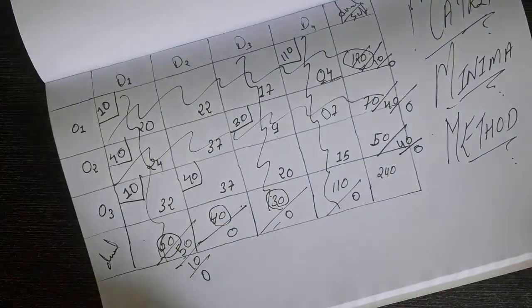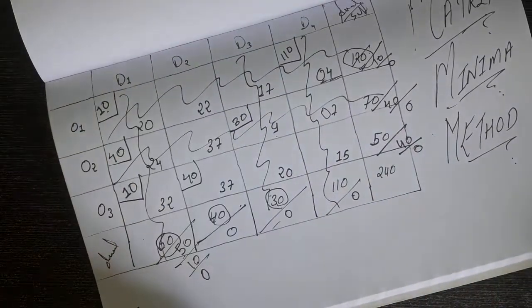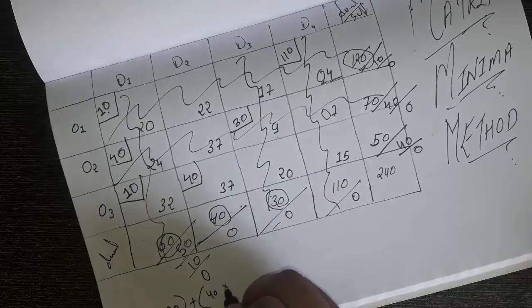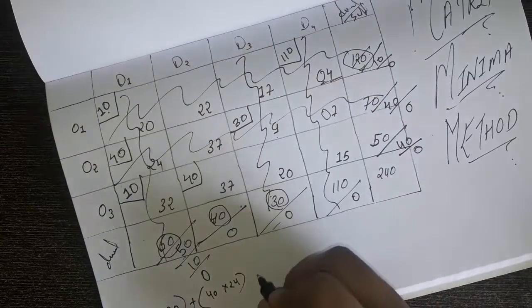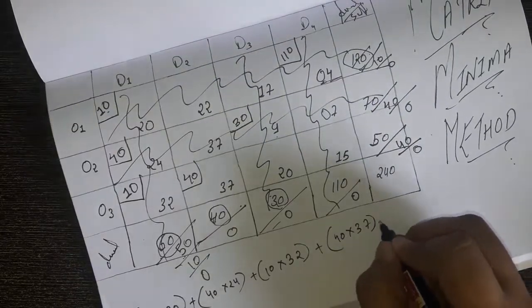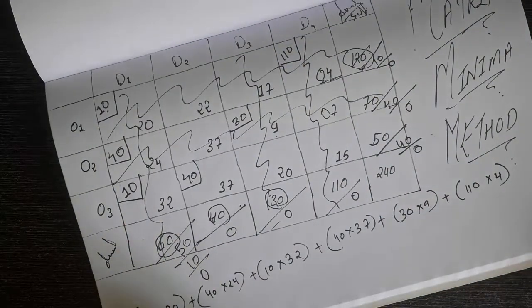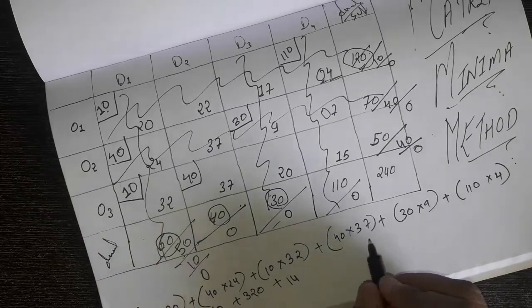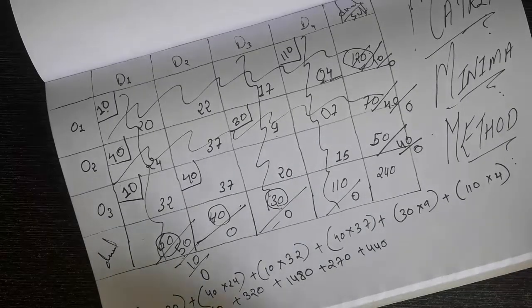Now to find the total cost, do the same thing as in the northwest corner method. Start from any corner. Multiply the allocated quantity by the cost for each cell and add them all together. For example, 10 multiplied by 20, then 40 multiplied by 24, and so on for every cell with an allocation. The final answer is 3670.